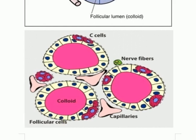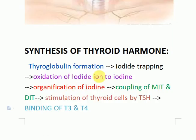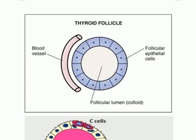The second step is iodide trapping, which occurs through the sodium-iodide co-transporter present in the thyroid follicular cells. Iodide is actively transported into the thyroid follicular cells for further incorporation into the thyroid hormone.